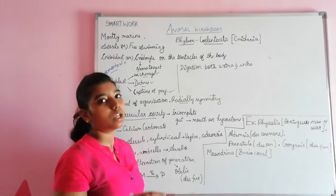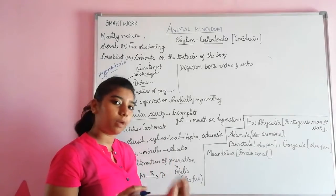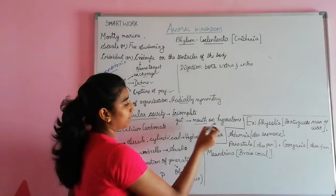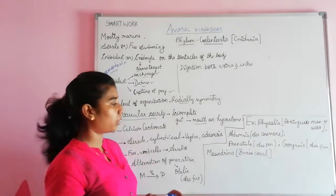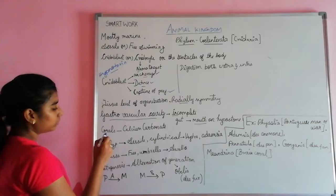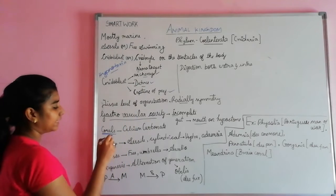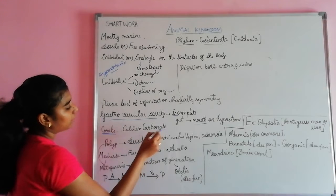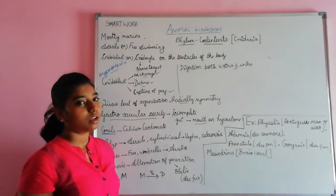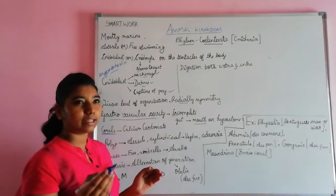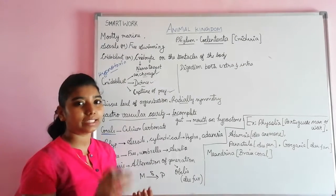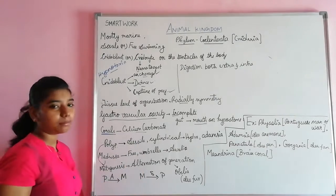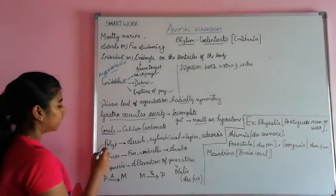They have an incomplete gut — that is, they have only one opening which serves as both mouth and anus. The mouth is present on the hypostome. Some coelenterates are corals and have a skeleton made up of calcium carbonate.